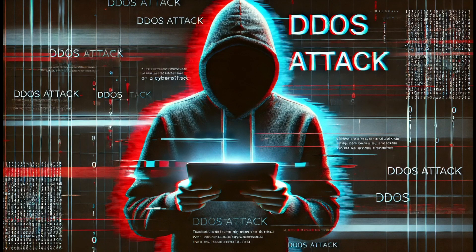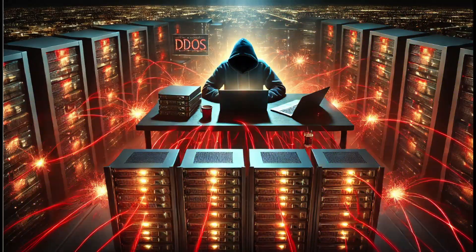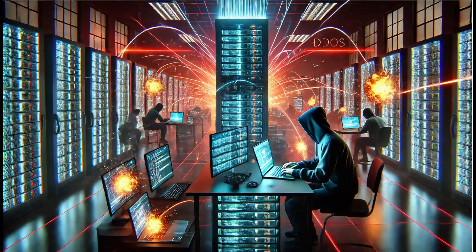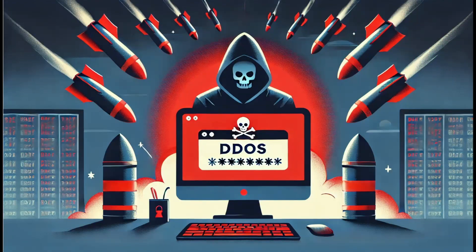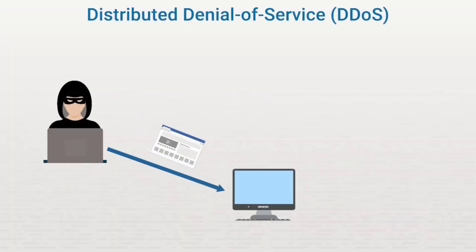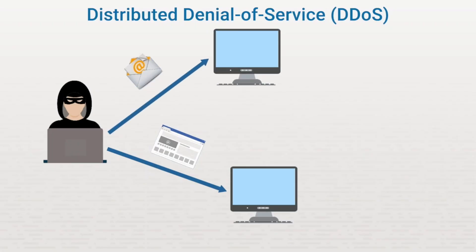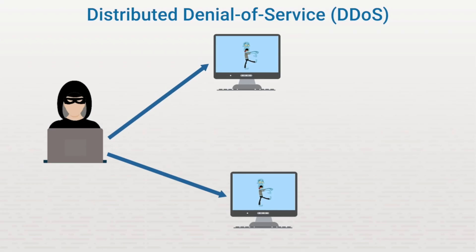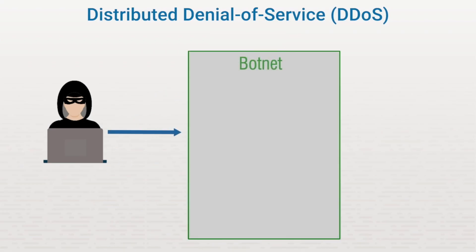Another form of a DOS attack is a distributed denial-of-service attack, or DDoS attack. A DDoS uses numerous computers and internet connections across the world to overload the target systems. DDoS attacks are usually executed through a network of devices that the attacker has gained control of. The attacker uses compromised websites and emails to distribute specially designed malware to poorly secured devices. This malware provides an access point to the attacker, which they can use to control the device.